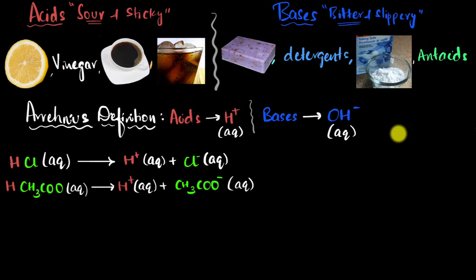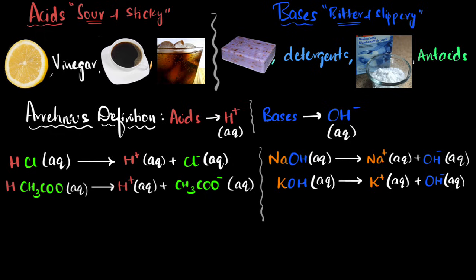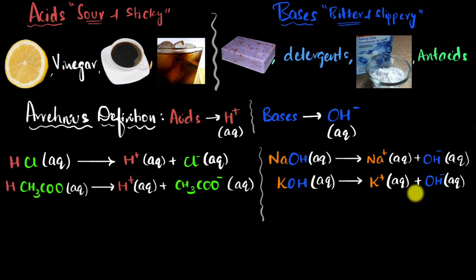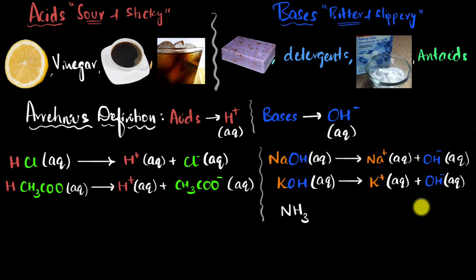Let's take some examples of bases. If you take sodium hydroxide or potassium hydroxide and mix them in water, you will find sodium ions, potassium ions, and OH- ions. So since they give you OH- ions, they are bases. Now it might seem reasonable to think that all bases should have OH in their formula — otherwise, how else will you get OH- ions? Well, turns out that's not true. If you take ammonia and put it in water, that will also increase the amount of OH- ions, which means technically ammonia is also a base.